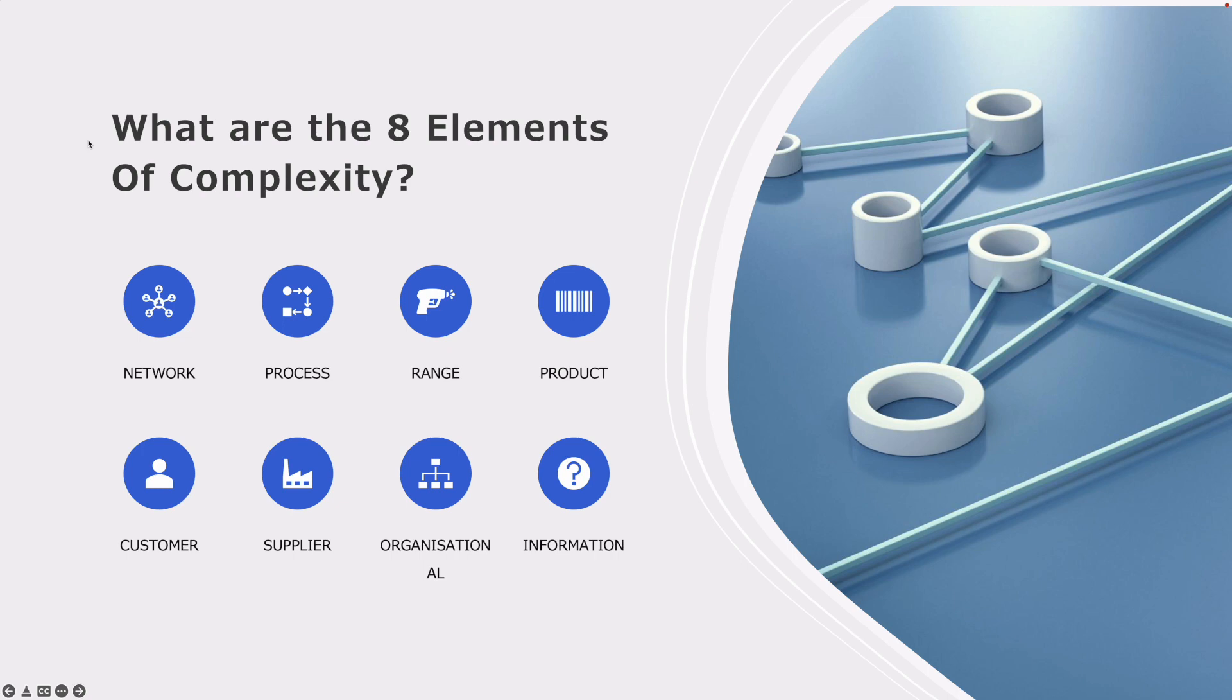So what are these eight elements of complexity management? We have network complexity, process complexity, range complexity, product complexity, customer, supplier, organizational, and information complexity. So let's get to them and talk about what these elements are.